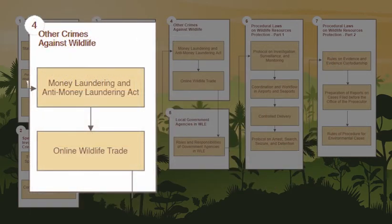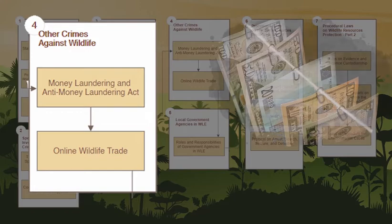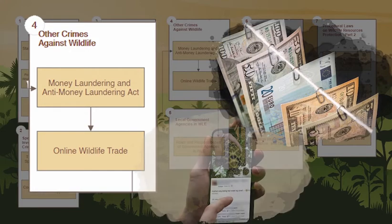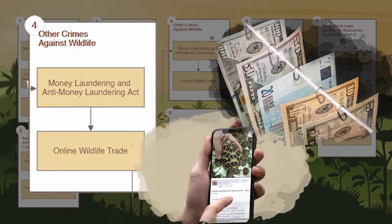The fourth module, Other Crimes Against Wildlife, discusses money laundering and online wildlife trade as crimes that threaten Philippine biodiversity.